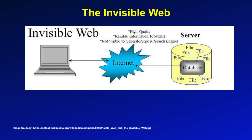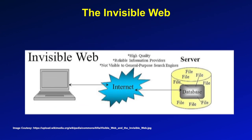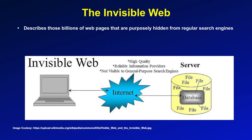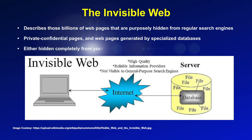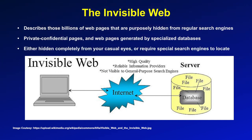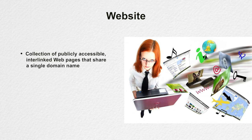The invisible web is the third part of the World Wide Web. Technically a subset of Web 2.0, the invisible web describes those billions of web pages that are purposely hidden from regular search engines. These invisible web pages are private, confidential pages and web pages generated by specialized databases. They are either hidden completely from casual eyes or require special search engines to locate. A website contains one to millions of interconnected pages with hyperlinks to help navigate around the site. You can find different kinds of information on the web like games, health matters, holiday destinations, train timetables, weather forecasts, and many more.